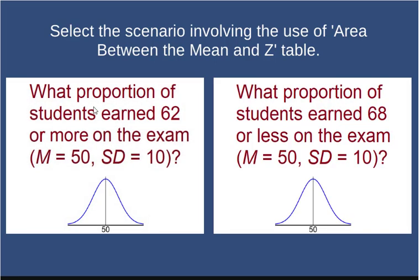Here it says: what proportion of students earned 62 or more? Again, that's less than half. In this case, I'd use the area beyond z. I need to select the scenario where I'd use the area between the mean and z.